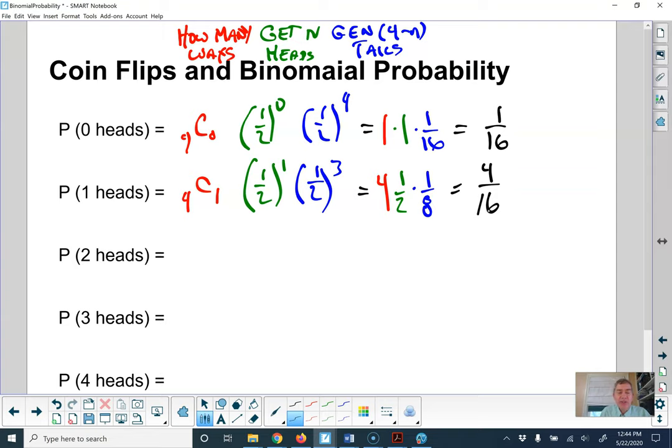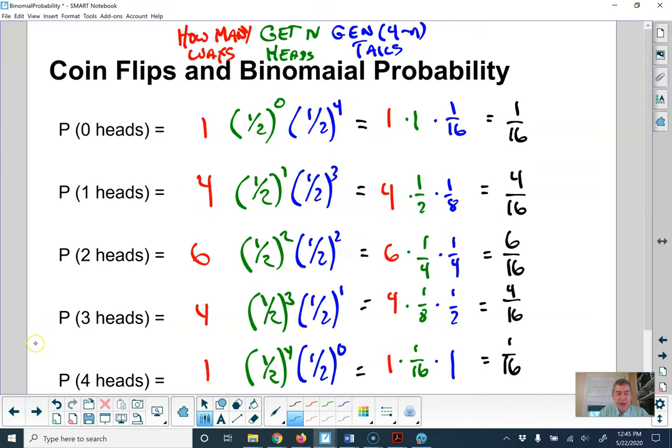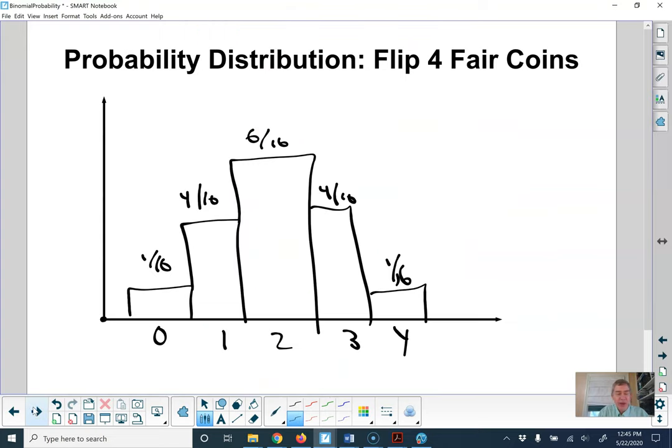That's all good. If you want to pause for a second and try one of these others for yourself, you can. And here are what they should get as you come out your answers: one sixteenth, four sixteenths, six sixteenths, four sixteenths, and one sixteenth. The same distribution as you had from the actual making a list version.